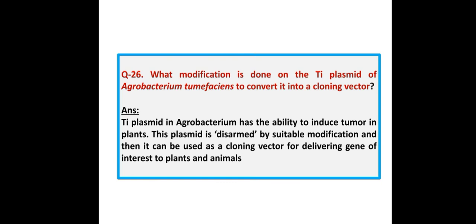What modification is done on the Ti plasmid of Agrobacterium tumefaciens to convert it into a cloning vector? Answer: The Ti plasmid in Agrobacterium has the ability to induce tumors in plants. This plasmid is disarmed by suitable modification so that it can be used as a cloning vector for delivering a gene of interest to plants.